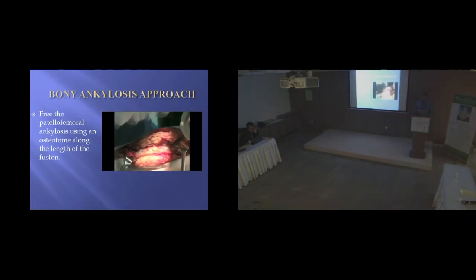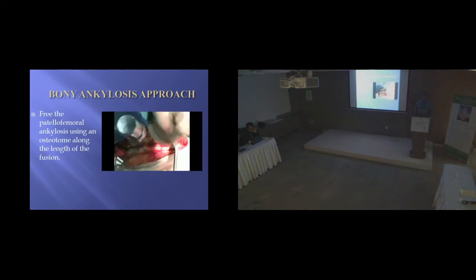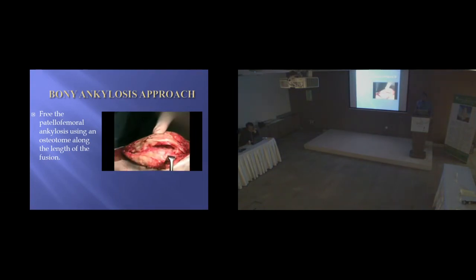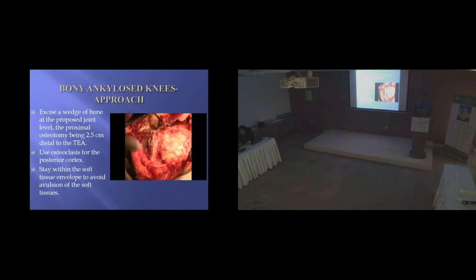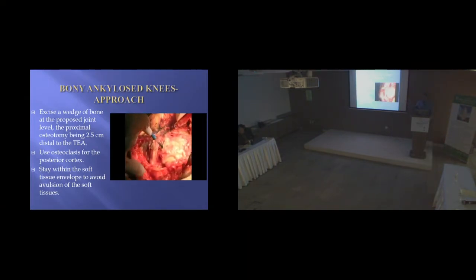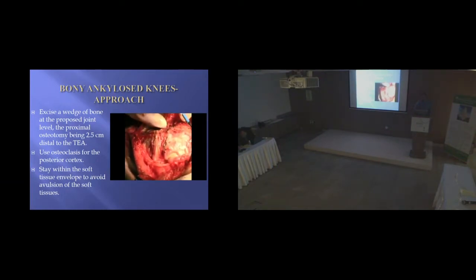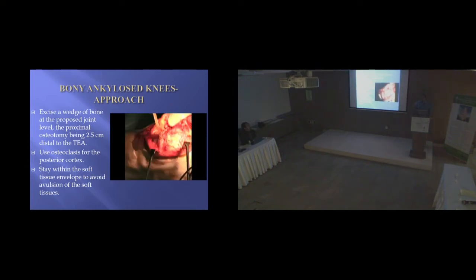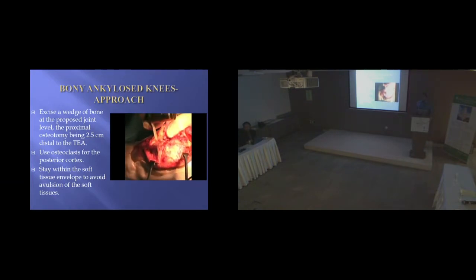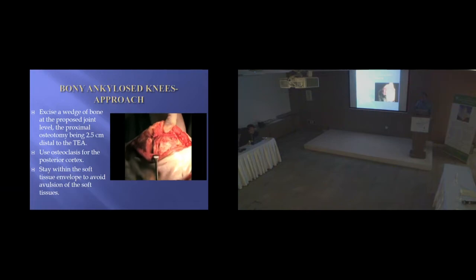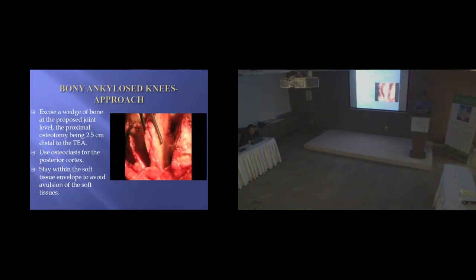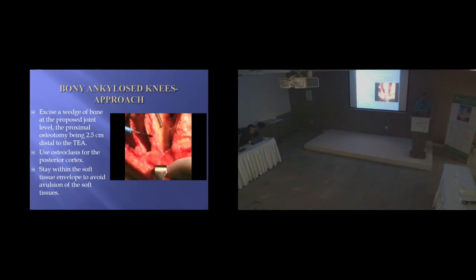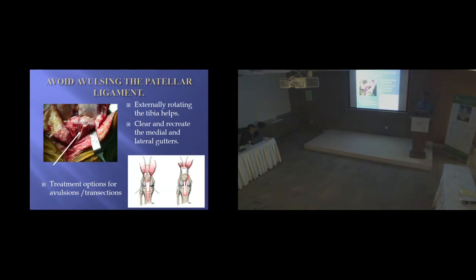This is a video of patellofemoral ankylosis. You take down the patellofemoral ankylosis with a sharp osteotome — this has been done with a rectus snip — and this allows you to evert your patella or at least move it to the side. For complete bony ankylosis between the femur and tibia, make your proximal osteotomy about 2.5 centimeters distal to the trans-epicondylar axis. When using a narrow blade, don't go all the way to the back, particularly in knees ankylosed in extension. Work your way through and take out this wafer of bone, giving you your flexion space and extension space. Try to preserve your collateral ligaments and patellar tendon.